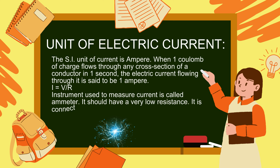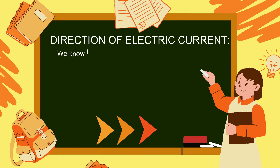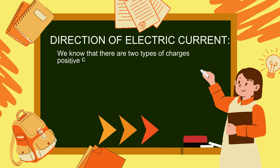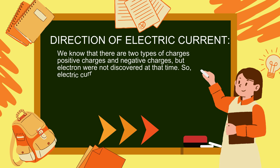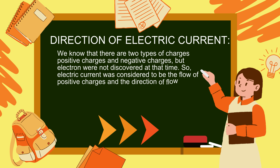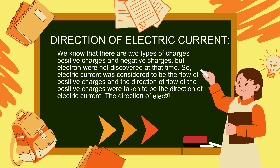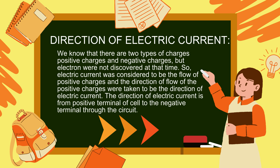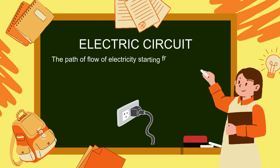The instrument used to measure current is called an ammeter. It should have very low resistance and is connected in series in the circuit. Direction of electric current: since electrons were not discovered initially, electric current was considered to be the flow of positive charges. The direction of flow of positive charges was taken as the direction of electric current — that is, from the positive terminal of the cell to the negative terminal through the circuit.